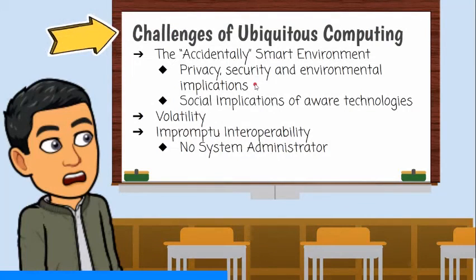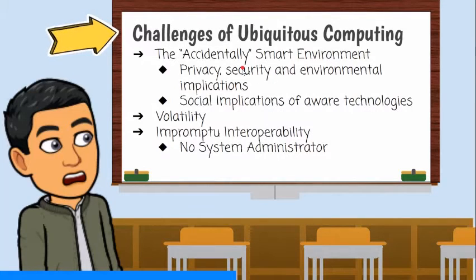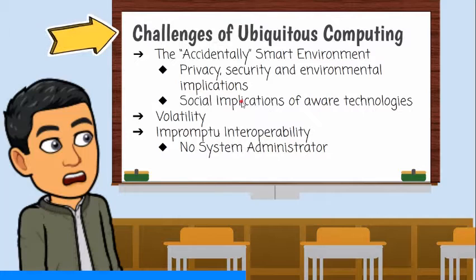Here are some challenges of ubiquitous computing. Privacy and security. In a fully networked world with ubiquitous sensor-equipped devices, several privacy and security issues may arise. The people in this environment will be worried about their privacy since there is the potential of total monitoring. Ubiquitous computing has a social impact on our society. For example, how will an individual know if they are within a smart environment where embedded devices are gathering data? Is it ethical to gather information from individuals without their knowledge?